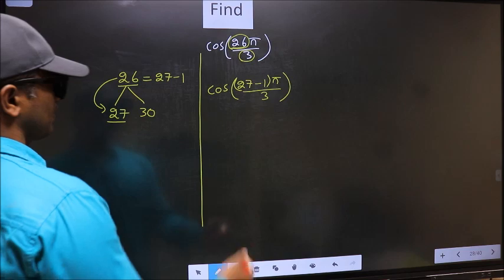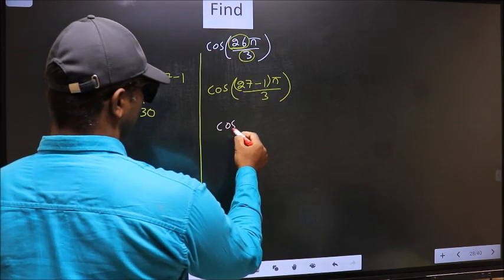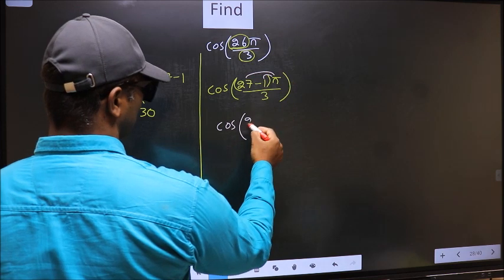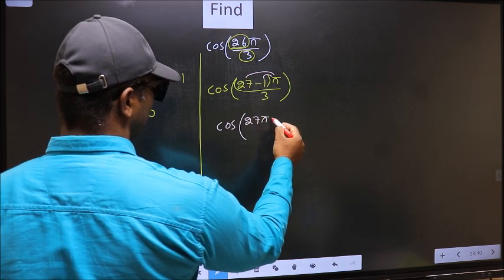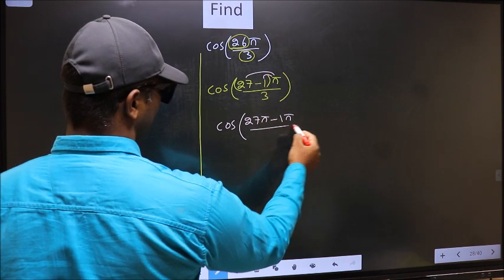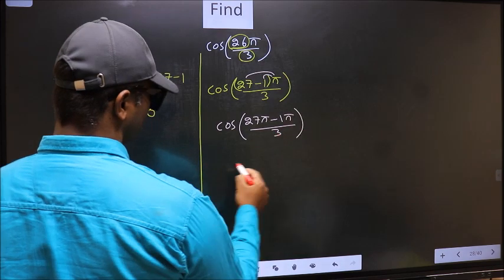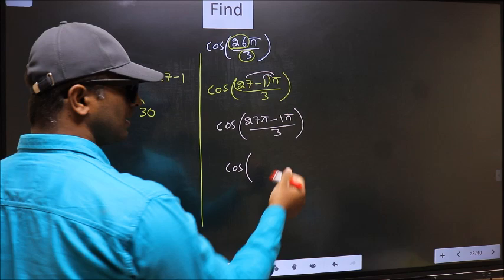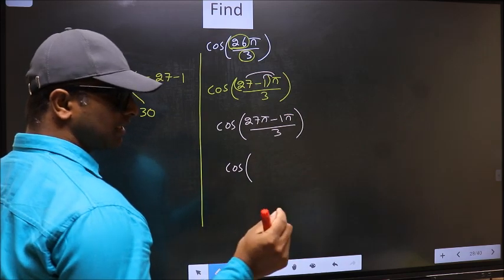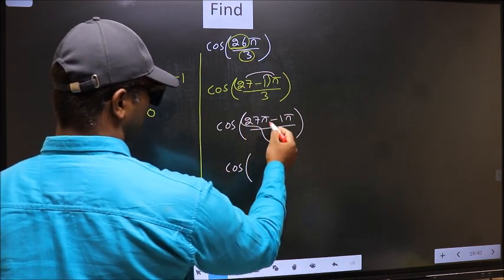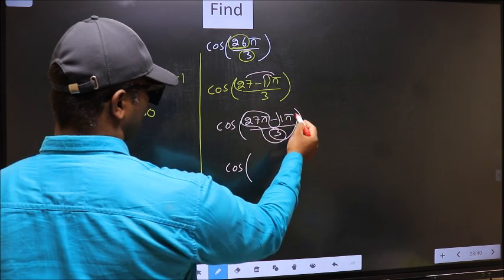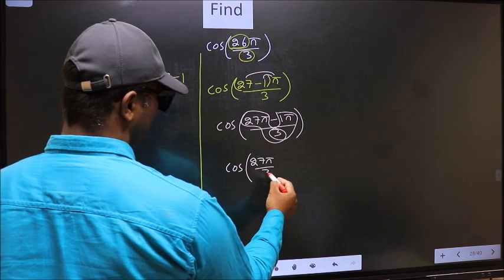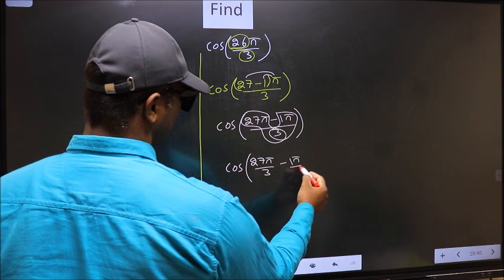Next, cos. Now you should open up the brackets. You get 27π minus 1π by 3. Now cos, in this, you should split the denominator in this way: that is 27π by 3 minus 1π by 3.